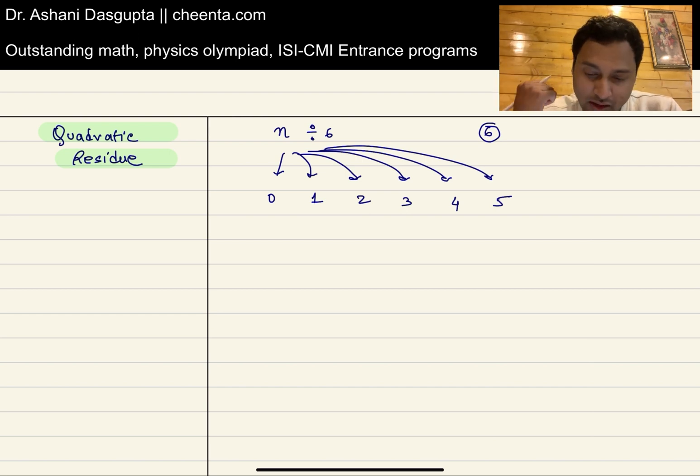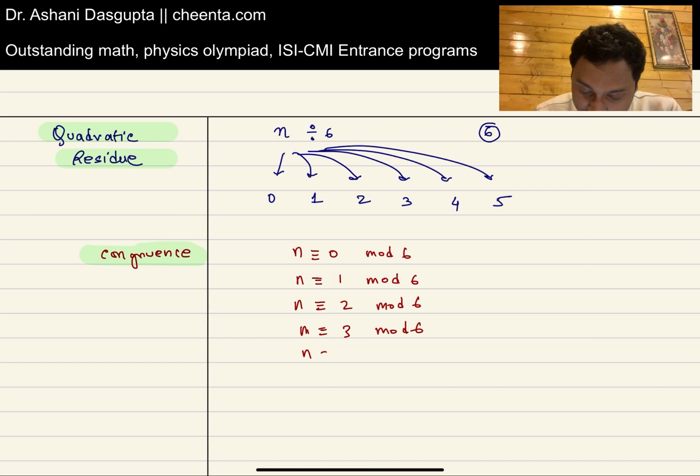So if you divide any number by 6, you have these six possible remainders, right? Now, in the language of congruence, if you are not familiar with the theory of congruence, I would suggest you to look in the link in the description. There are some tutorials on that. n is congruent to 0 mod 6, n is congruent to 1 mod 6, mod 6, and similarly 2 mod 6, 3 mod 6, 4 mod 6, and 5 mod 6.